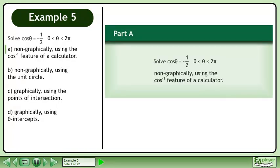Solve cos theta equals negative 1 over 2, where theta is between 0 and 2 pi, non-graphically using the cosine inverse feature of a calculator.